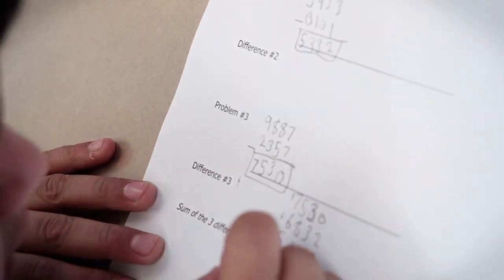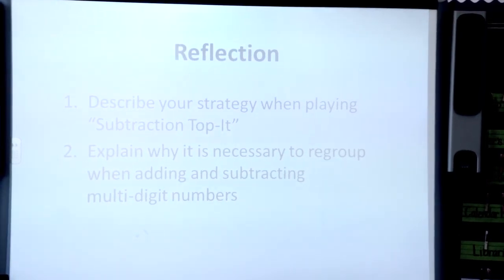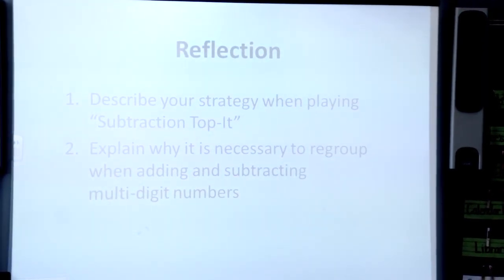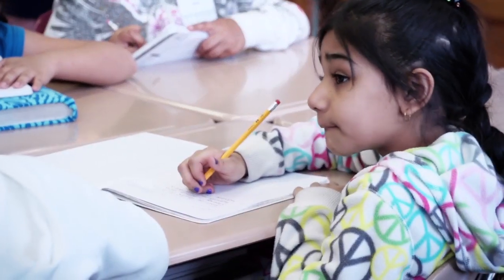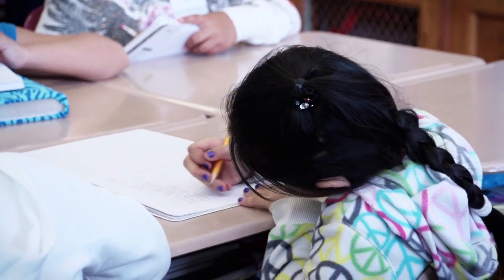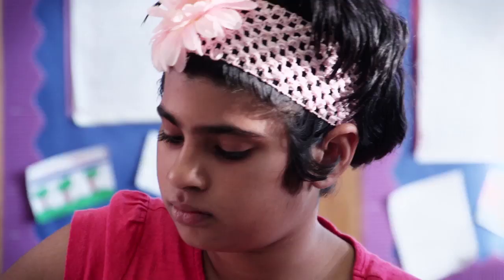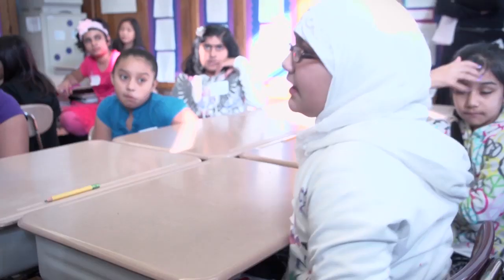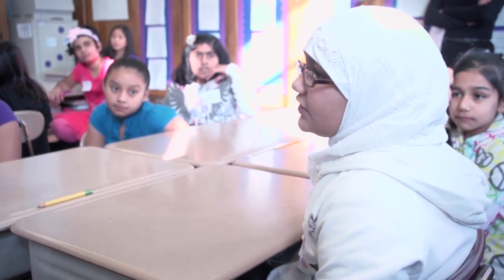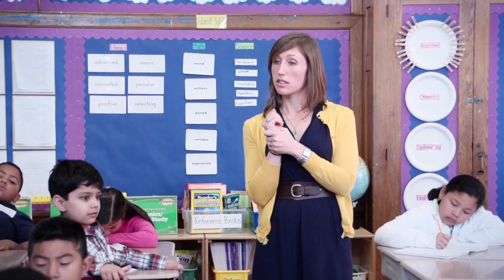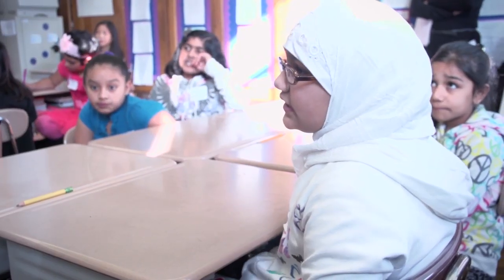At the end of every lesson we all come together and close on what we did, where they have to explain how we use regrouping and how they solved the problem. Who would like to share their strategy when they play the game? Kyla? For the second numbers I put the small digits so I could get a higher number. Exactly — when you go from a high to a low you have a greater difference. Who would like to explain why it's necessary to regroup when adding and subtracting multi-digit numbers? When there's a zero in front of the bottom numbers, then you have to regroup and make the ones place a ten and subtract it. So now we have a larger number on top.